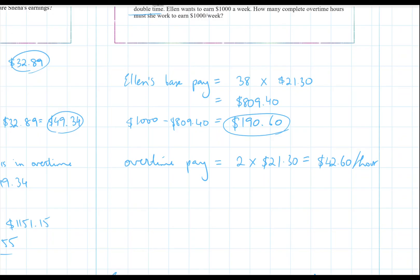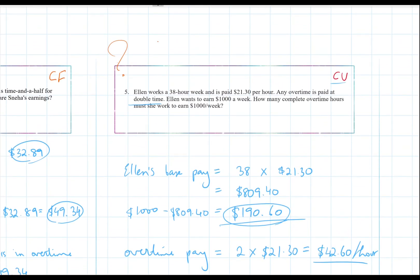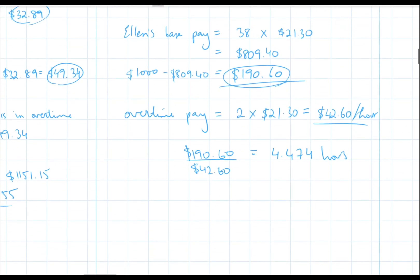So if she wants to make $190.60 and she's getting paid $42.60 an hour, she needs to work 4.474 hours. Now, because it asks how many complete overtime hours must she work, 4 hours is not going to be enough. So Ellen must work 5 complete hours.